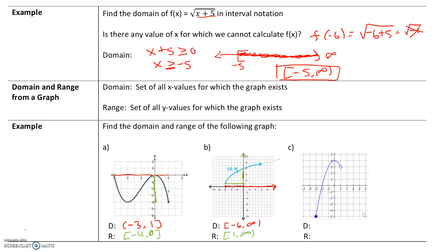For the next graph, let's look at the smallest x value for which the graph exists. At x equals negative 4 the graph doesn't exist, but at x equals negative 3 it does — that's the smallest x value. We keep going up to x equals 1, which is the highest x value because after 1 the graph does not exist. At negative 3 the point is included, so we have bracket negative 3. At 1 the point is not included, so it's parentheses 1. That's our domain: negative 3 comma 1.